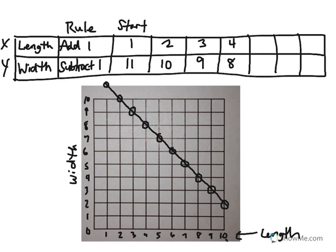So to find the width for a length of 10, I can extend my table out. For example, I can add 5 and 6 to my table and follow the rule. I'm subtracting for the width, so I'm counting down. And I can do that all the way up to 10.